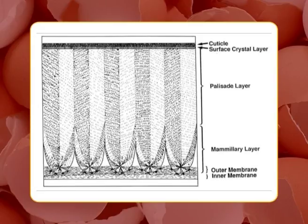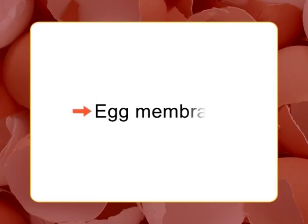The mammillary layer is the innermost layer of the shell, adjacent to the outer shell membrane. It is composed of numerous roughly conical knobs or mammillae, oval to circular in cross-section. These mammillae are arranged in such a way that they create spaces or pores within the shell.